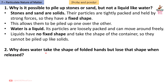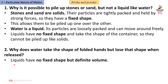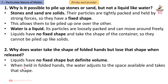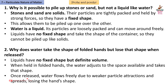Question 2: Why does water take the shape of folded hands but lose that shape when released? Answer: Liquids have no fixed shape but definite volume. When held in folded hands, water adjusts to the space available and takes that shape. Once released, water flows freely due to weaker particle attractions and spreads, losing the hand's shape.